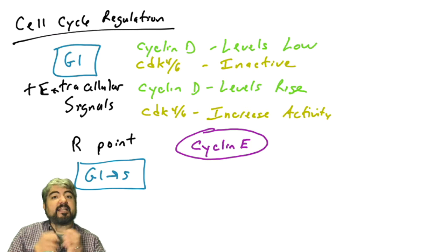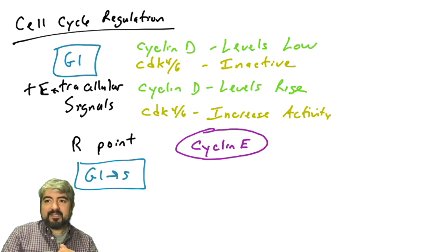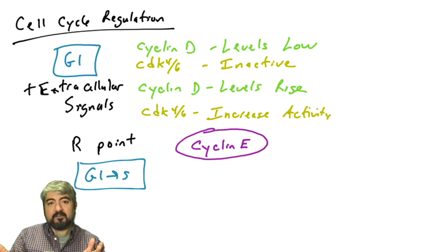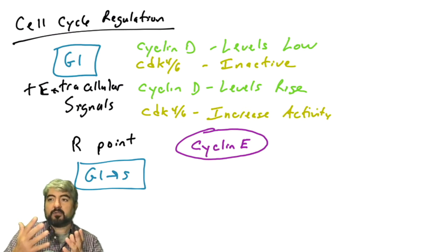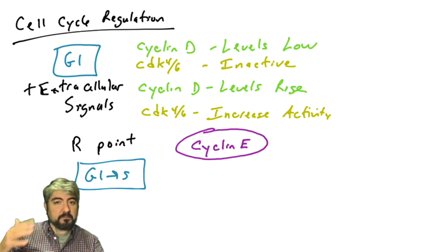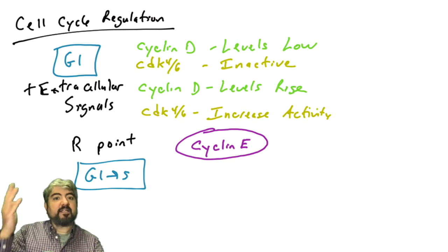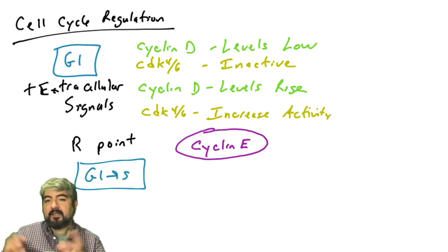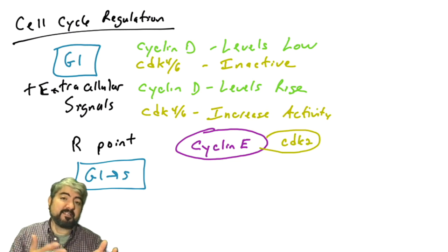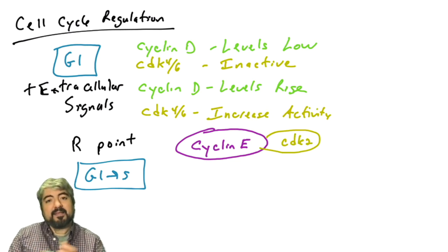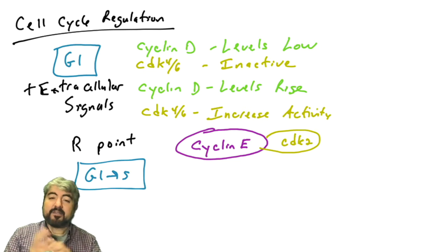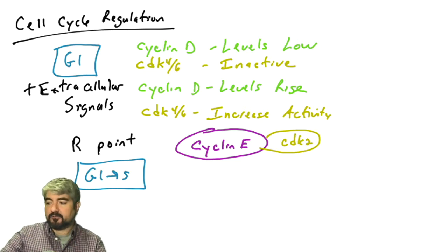First, we're going to introduce cyclin E. Cyclin E is one of the cyclin family of proteins — it's a protein whose levels cycle, so it's low and then it increases. What do cyclins do? They bind cyclin-dependent kinases and that binding helps activate them. We're going to see a CDK called CDK2, which is the binding partner for cyclin E.